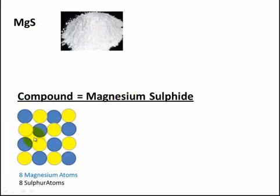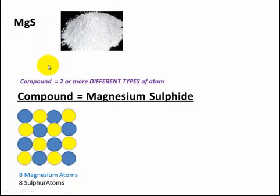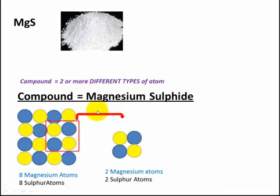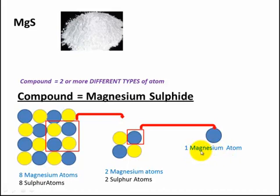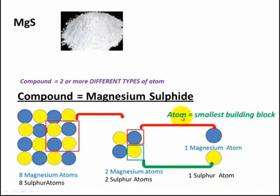Magnesium sulfide - this white powder here is a compound. It consists of two or more different types of atoms: magnesium atoms (Mg) and sulfur atoms (S). It's a compound because it's two or more different types of atoms. We can see that clearly here - the blue are magnesium, the yellow is sulfur. We can break it down into magnesium atoms or sulfur atoms, and remember an atom is the smallest building block. So the compound magnesium sulfide is made up of magnesium and sulfur atoms.